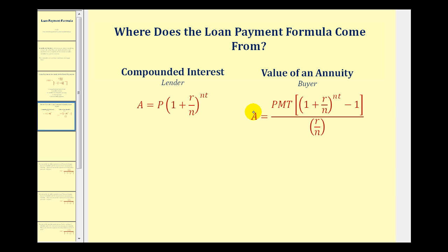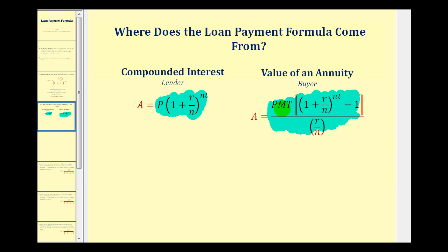So the loan payment formula comes from combining these two formulas, or setting them equal to each other. Since these are both equal to A, we can set the right sides of these equations equal to each other. And then if we solve for PMT, or payment, we should have our loan payment formula.